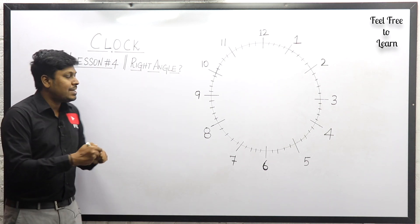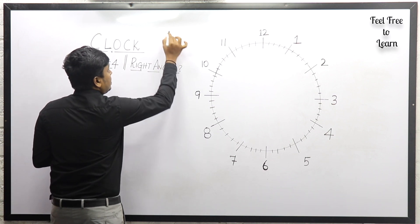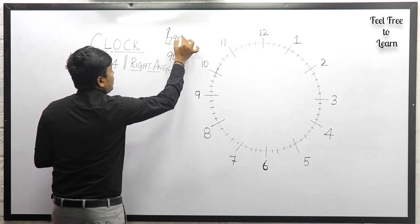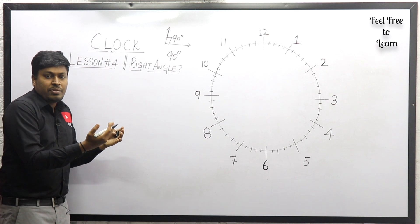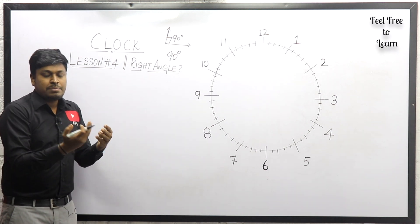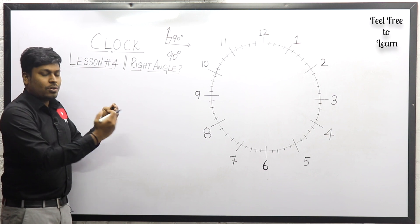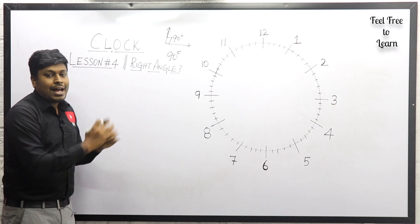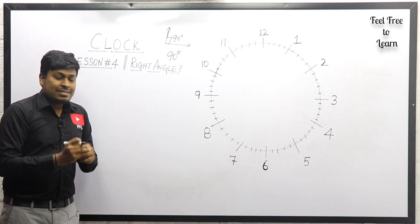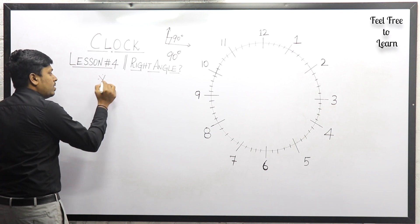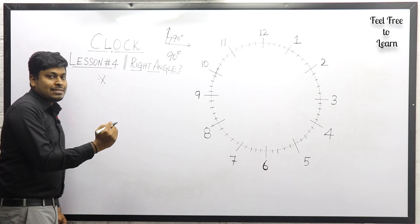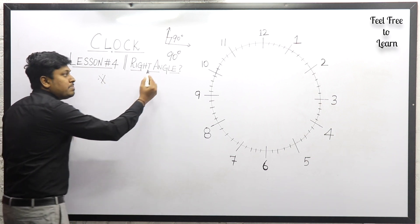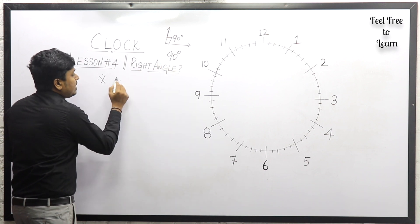Right angle means the angle should be 90 degrees. Here our target is to find, using the given timing — between two o'clock and three o'clock, or four o'clock and five o'clock — at what minute both hands of the clock are at right angle. One important thing in lesson number four: in all previous three lessons we got only one answer, but here you will get two answers.